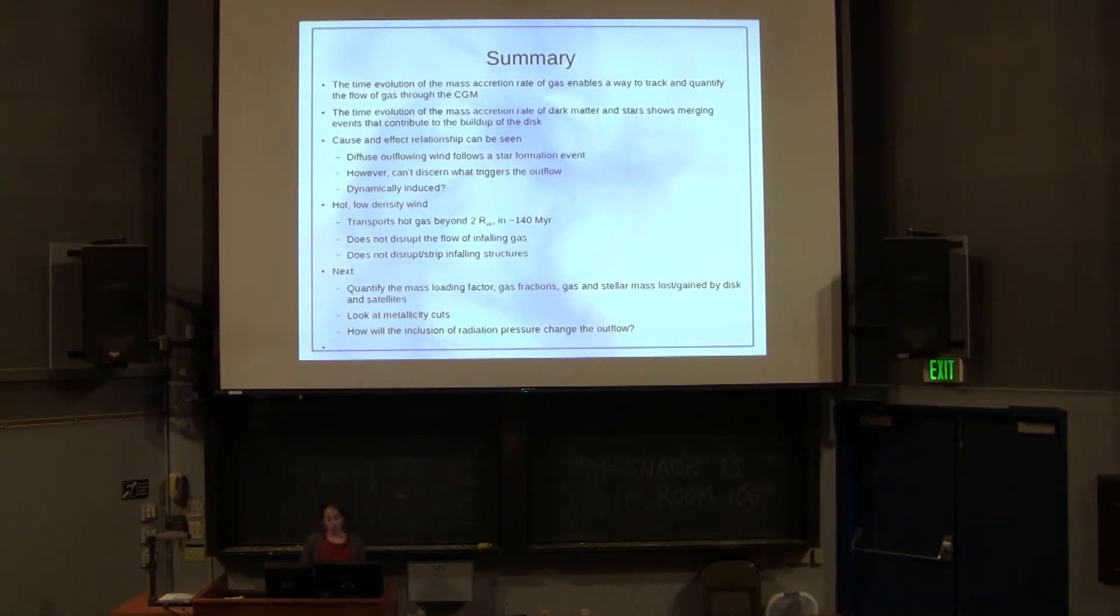A hot low density wind erupted and transported gas to two virial radii within 140 million years and did not disrupt any of the infalling material, which is a question that a lot of people have on their mind. What we need to do next is look at quantifying things like the gas fractions and the stellar fractions of material coming in, especially right before the star formation event, and look at the gas and stellar mass lost and gained by the disk and the incoming satellites. What we also haven't done yet is look at the metallicity, different metallicity cuts to see what that tells us. And then we will also compare our model to one with radiation pressure to see how that changes the outflow.